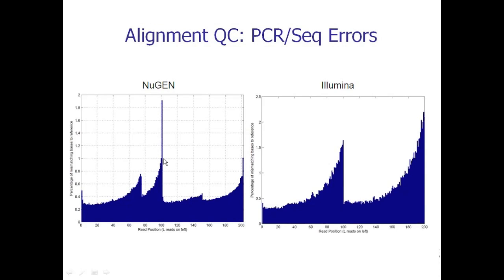This is a plot of the proportion of bases that do not match the reference genome as a function of read position. For example, at position one, once you average over all the reads on chromosome 20, about 0.5 percent of bases at that position do not match the reference genome. Some of these are reflective of genuine biological variation, but the fact that it goes up towards the ends of reads is indicative of higher error rates. There was a little blip in quality scores for the NuGen library. What we're looking for is an error rate less than one percent overall, and for both Illumina and NuGen that was the case. The increase towards the ends of the reads is to be expected.